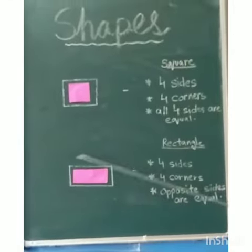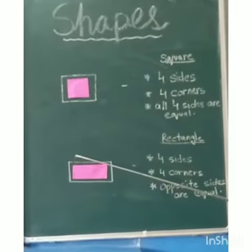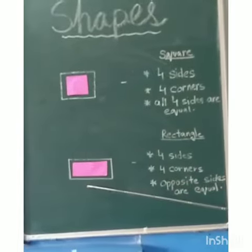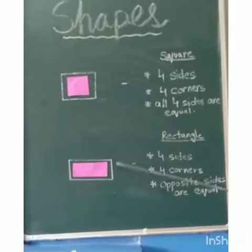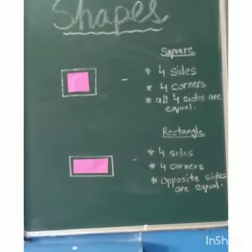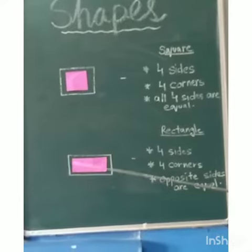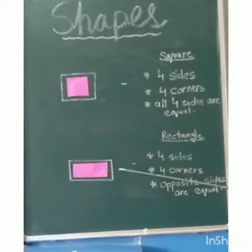So this is a rectangle. A rectangle also has four sides, four corners, and a rectangle has two long sides and two short sides.